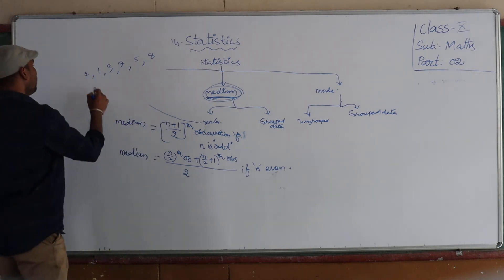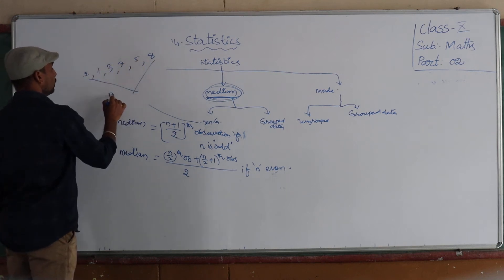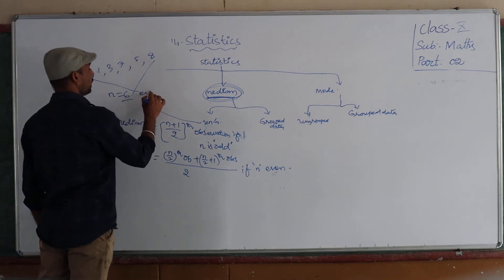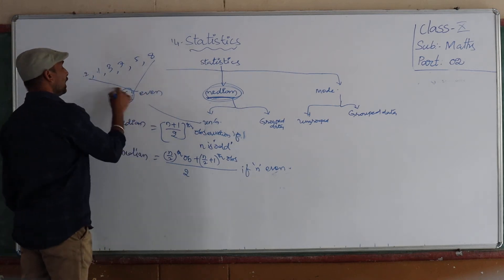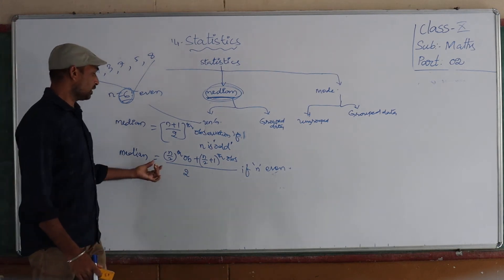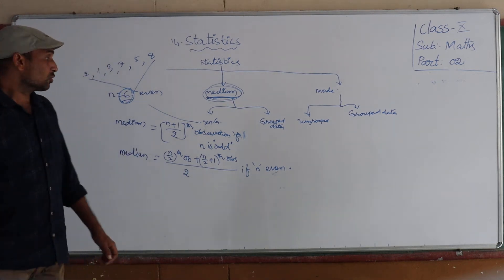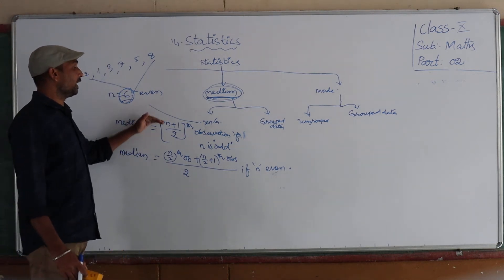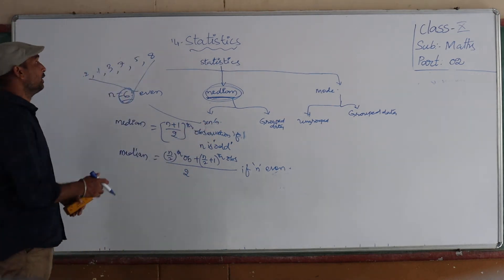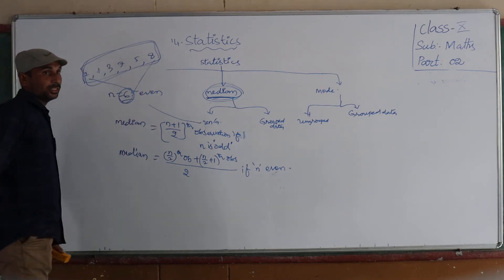So here, how many observations are there? 1, 2, 3, 4, 5, 6 — so n is 6. 6 is an even number. So when the given observations are even, we use the even-n formula to find the median. This applies when the given data is raw data, i.e., ungrouped data.